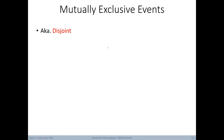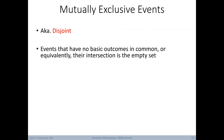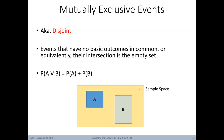Now let's move on to mutually exclusive events, also known as disjoint events. These are events that have no basic outcomes in common, or equivalently, their intersection is the empty set. In this situation, the probability of A or B is just the sum of probability of A plus probability of B — there's no overlap. We call these two events mutually exclusive events, as they do not happen at the same time.